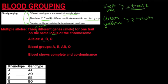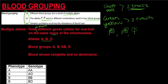The alleles, as you may recall from a previous video, are written as follows: blood group A uses a capital I superscript A, blood group B uses a capital I superscript B, and blood group O, which is recessive, is written with a lowercase i. Blood groups A and B are both dominant, so their alleles are written with capital letters, whereas blood group O is recessive and written with lowercase i.